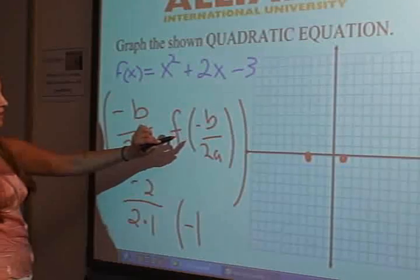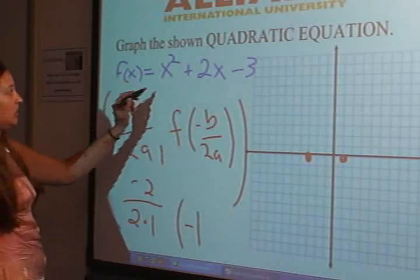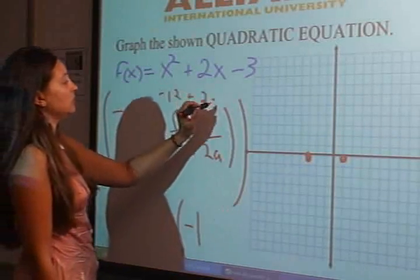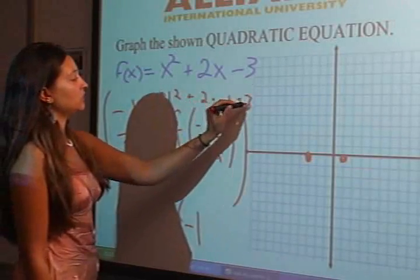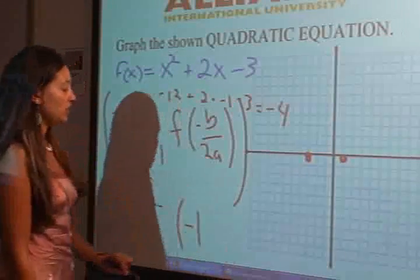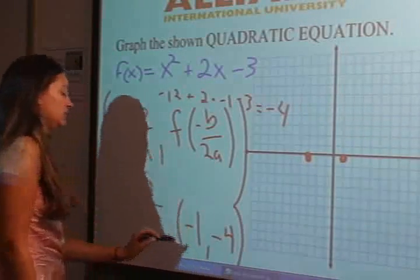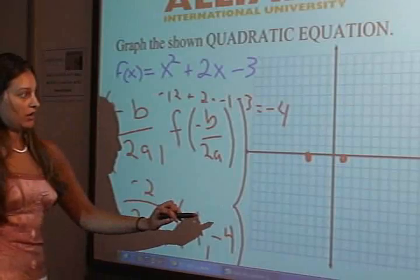And then let's plug this negative 1 back into the equation. So it's going to be negative 1 squared plus 2 times negative 1 minus 3, which equals negative 4. Right? Yep. Okay. So comma negative 4, this is our x-point and our y-point.